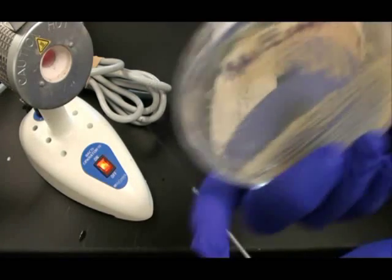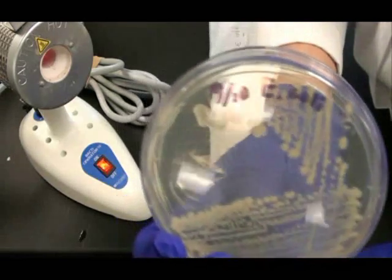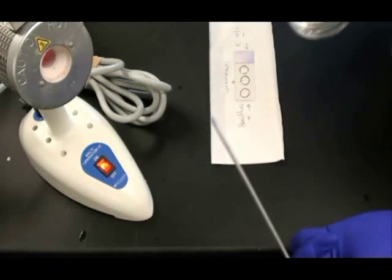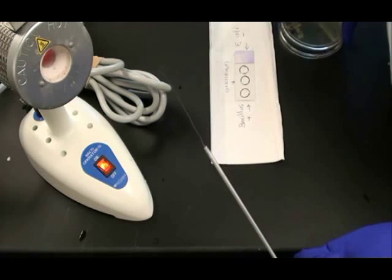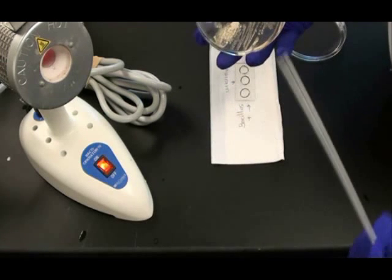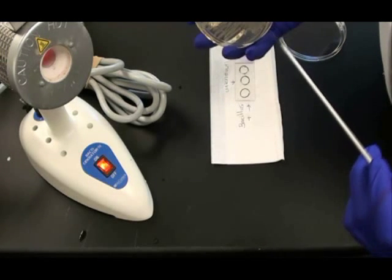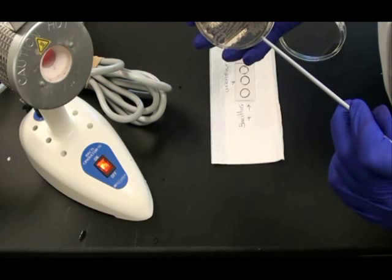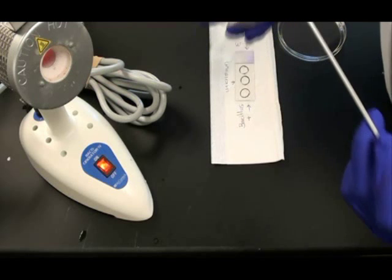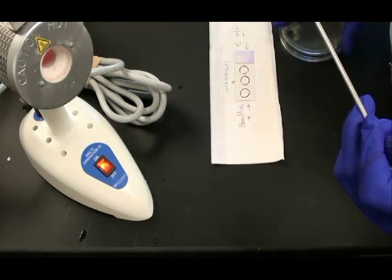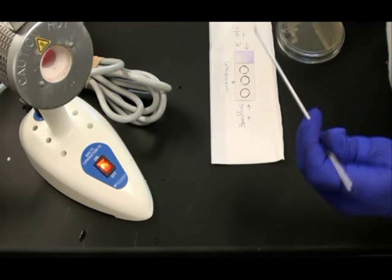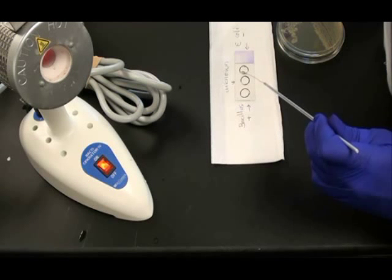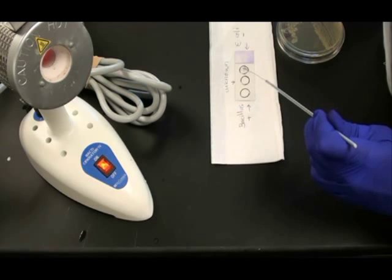I'm going to start with my negative control E. coli, which does not produce endospores. That's why it's my negative control. I will take my cooled inoculation loop and very gently grab a colony of E. coli off of the plate. Then I take that sample and I swirl it in the water on the right side of the slide in the right circle.